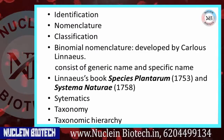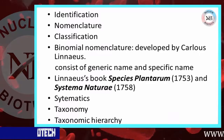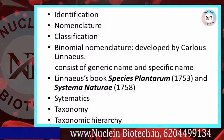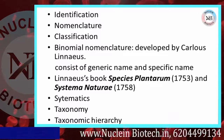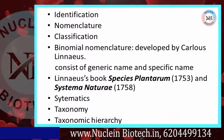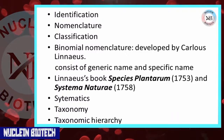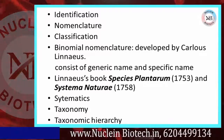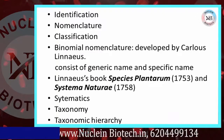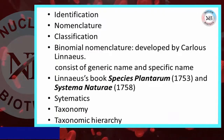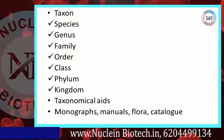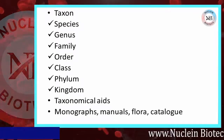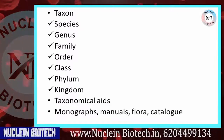Systematics involves investigating life forms in association with identification, nomenclature, arrangement, and evolution. Now, taxonomic categories depict the rank or level in the hierarchical arrangement.